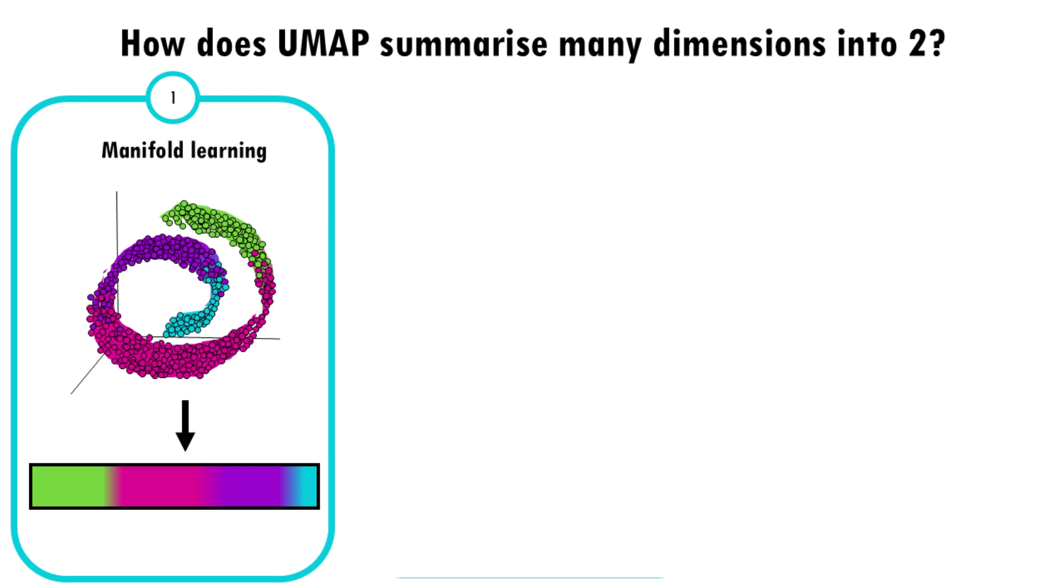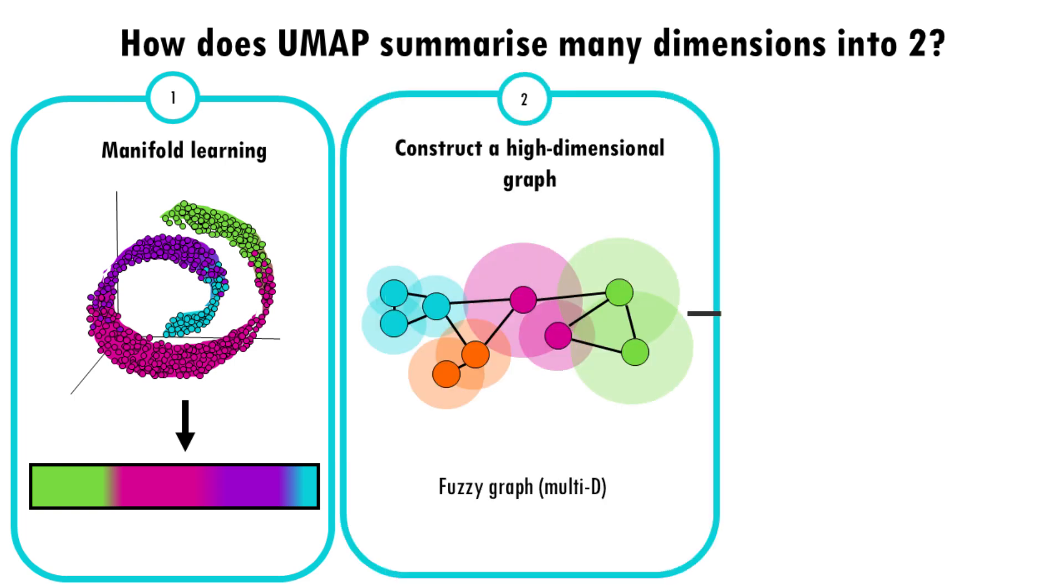So UMAP needs to construct a high dimensional graph first. So it starts by creating a fuzzy graph, which is a high dimensional graph where each data point, in this case each cell, is connected to its nearest neighbors. So how does UMAP decide whether two cells are connected? We'll talk about this high dimensional fuzzy graph in just a bit. But for now, just know that with this multi-dimensional graph, UMAP ensures that local structure is preserved in balance with global structure. This is a key difference and advantage over TSNE.